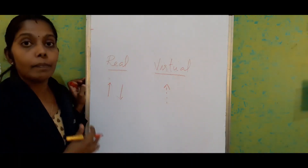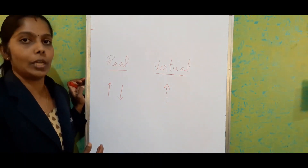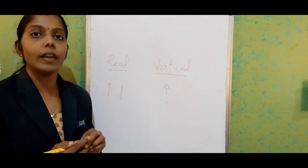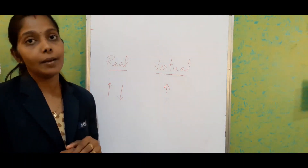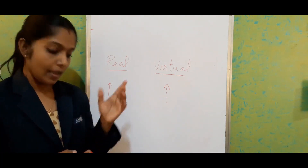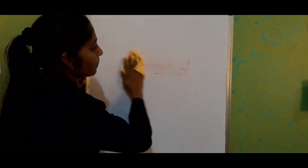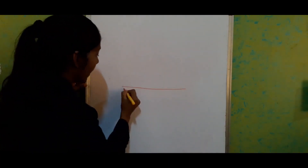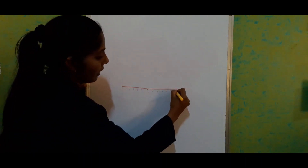So these are the three differentiations between the real image and virtual image. In 7th standard, we studied how to draw the image formation of a point object kept in front of a plane mirror. Just consider — this is our mirror, and one side is shown with a dotted line to indicate the coated surface.